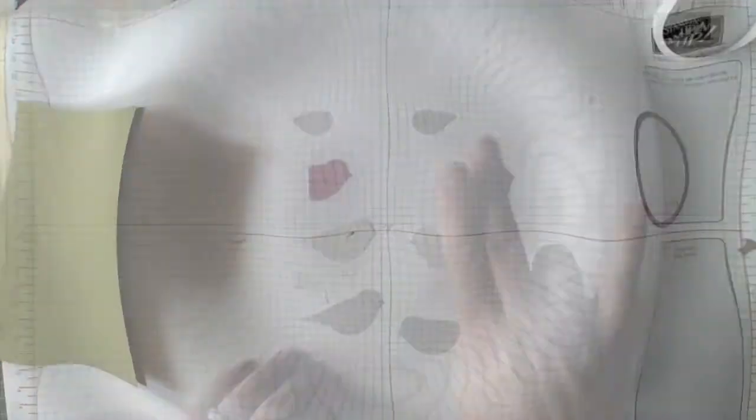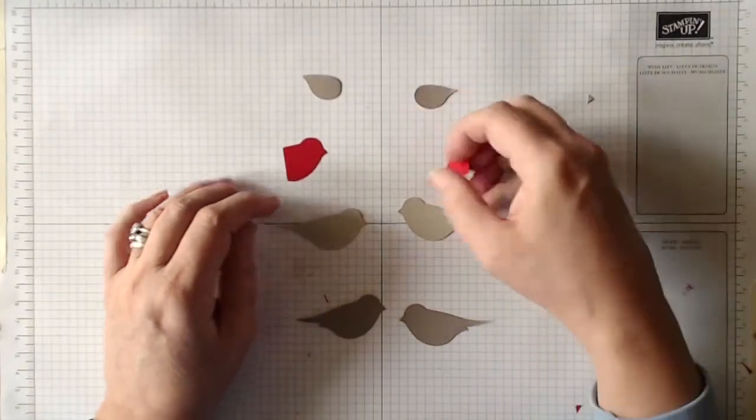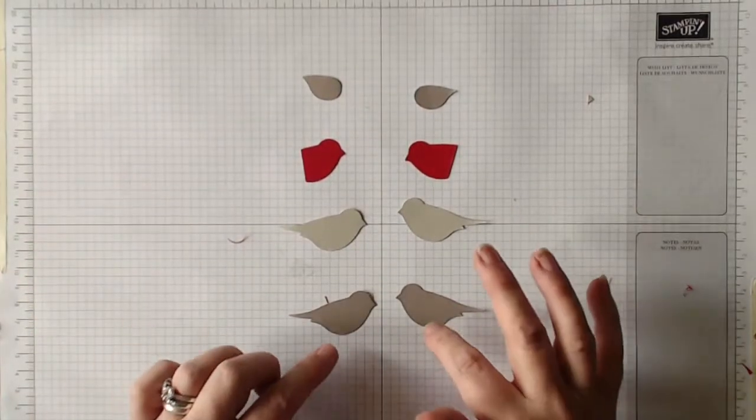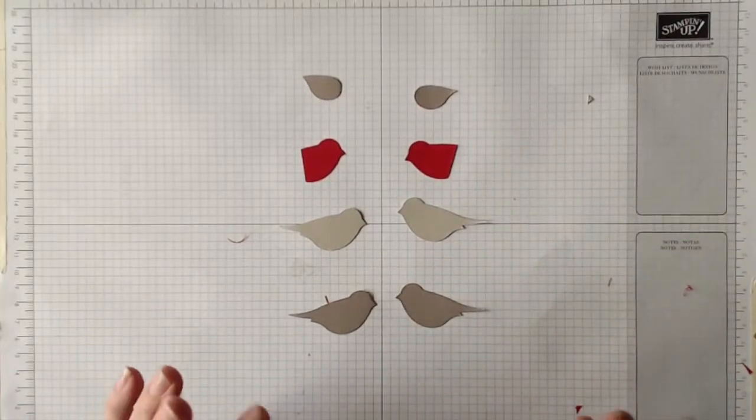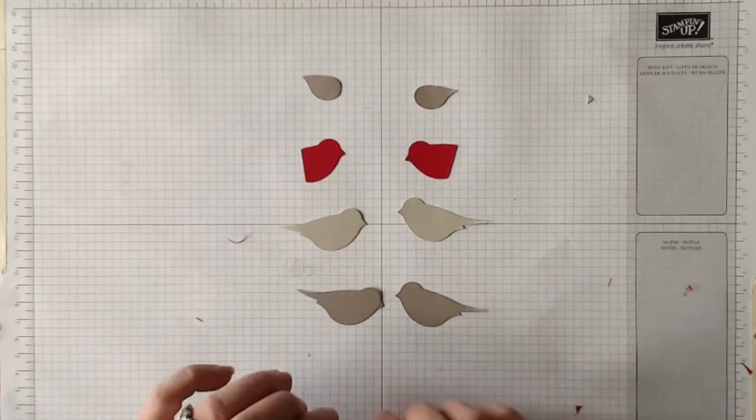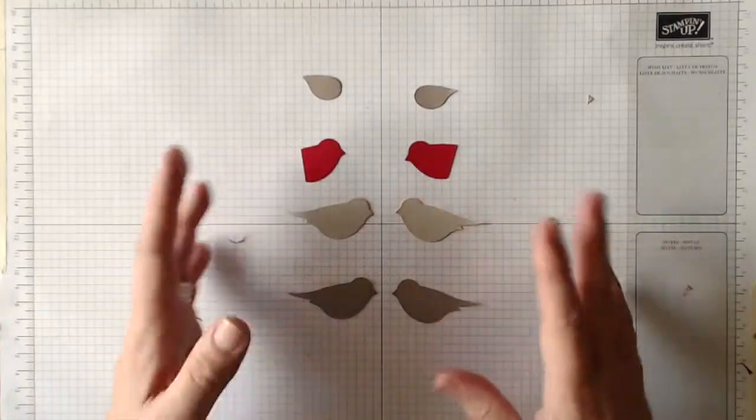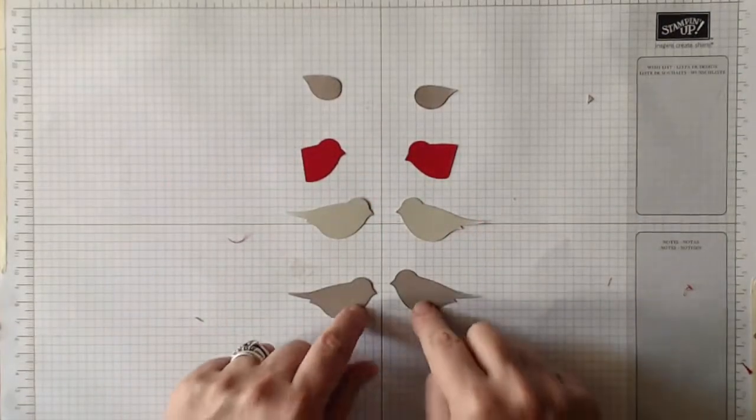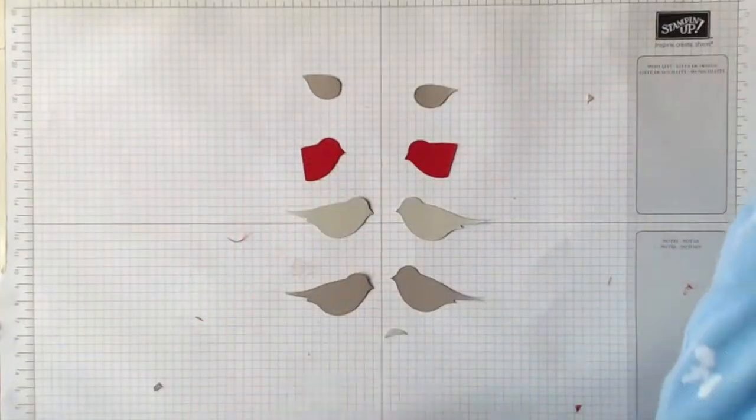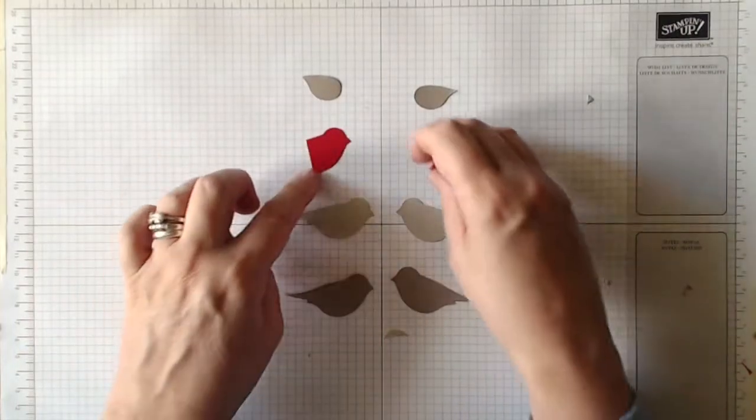I did some research into robins because the first couple of robins I made just didn't look right. I was making them in brown with a red chest and they didn't look right at all. I discovered that robins have a kind of gray-beige color between the red and the brown of their feathers. These robins I've cut out of Tip Top Taupe with my Bird Builder Punch, these are Sahara Sand, and these are Real Red.